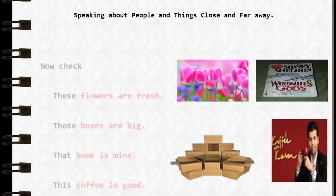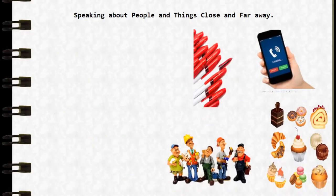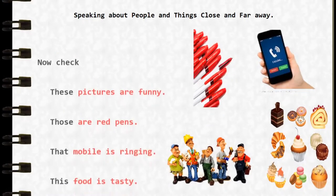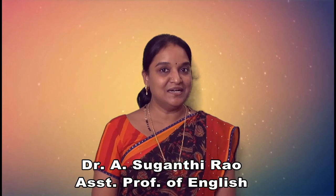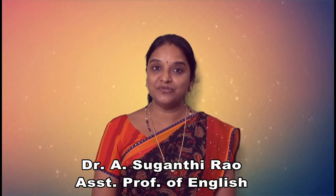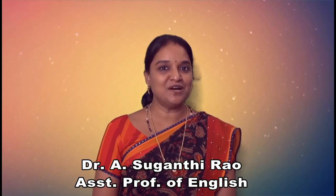Now check — these are sentences which I have completed with my idea. So viewers, I'm very sure that you will be able to use the words 'this', 'that', 'these', and 'those' to point out things near and far away. Thank you.